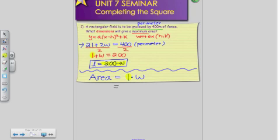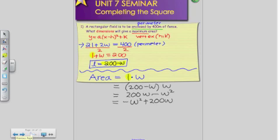So we can rewrite this question as 200 minus W times W. And when you do that, you get 200W minus W squared. Or we can rearrange it so I have negative W squared plus 200W. So now I finally have a question that I can try to complete the square with.